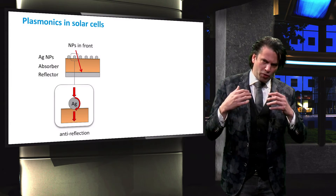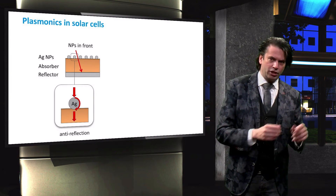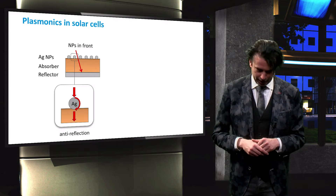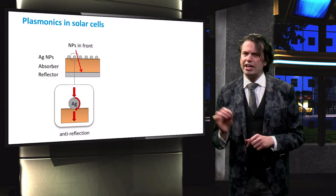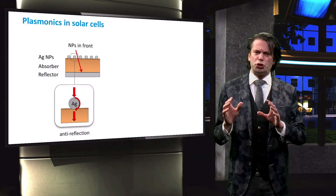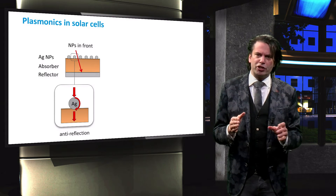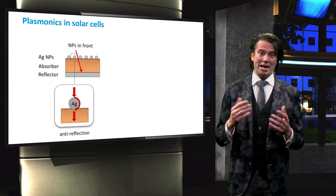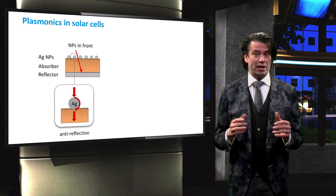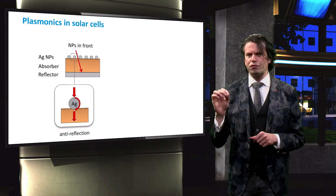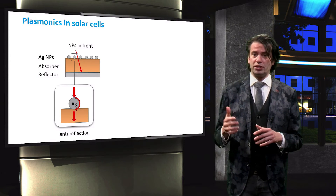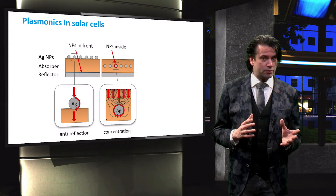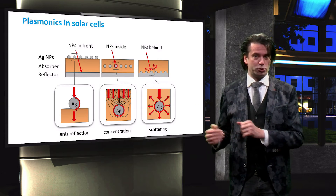We just observed the strong relation between attenuation, the geometry of the nanoparticle, and the refractive index of the dielectric. This relation provides us with the opportunity to tune the plasmonic behavior to suit a specific purpose. The purpose of the metal nanoparticles can vary depending on the configuration, including solar cells with the nanoparticles at the front of the cell, inside the absorber layer, or behind the absorber layer.